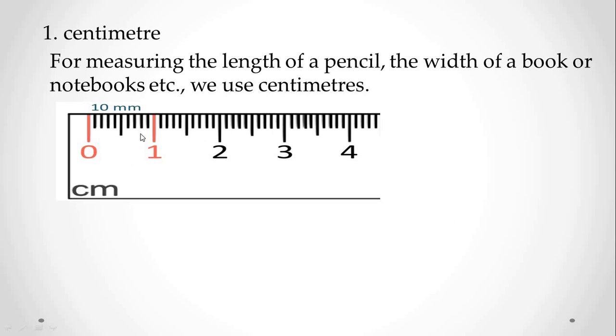And you observe in between 0 and 1 small lines are there. So this middle line indicates half centimeter. You see in between 0 and 1, it is just like a number line. Between 0 and 1, 10 partitions are there. So you can say 1 centimeter is 10 millimeters.